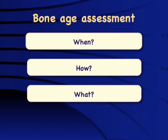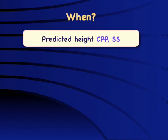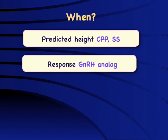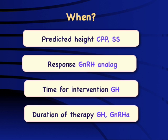We'll try to look into bone age assessment in a simplistic manner, answering three key questions: when, how, and what. When do we need to do a bone age? Coming from a pediatric endocrinologist, pretty much every patient would require bone age assessment — for short stature, predicted height, precocious puberty, evaluation of response to therapy like GnRH analog therapy, to look at how GnRH analogs have halted bone age progression, and to decide how long to continue growth-promoting therapies.